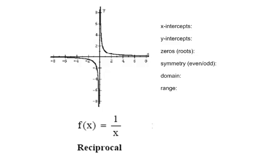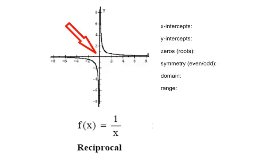Here is the parent reciprocal function. Reciprocal means 1 over, or some constant over. f of x equals 1 over x. Anytime you see x in the denominator of a fraction, you should automatically know there will be problems when x equals 0 — we cannot divide by 0. So anytime the denominator equals 0 for this reciprocal function or any member of this family, you won't have a corresponding y output.